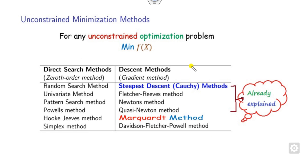In our previous lecture we have already discussed about the steepest descent, Fletcher-Reeves, Newton's, and Quasi-Newton's methods. Now in this lecture we will discuss about the Marquardt method for solving the unconstrained optimization problem.